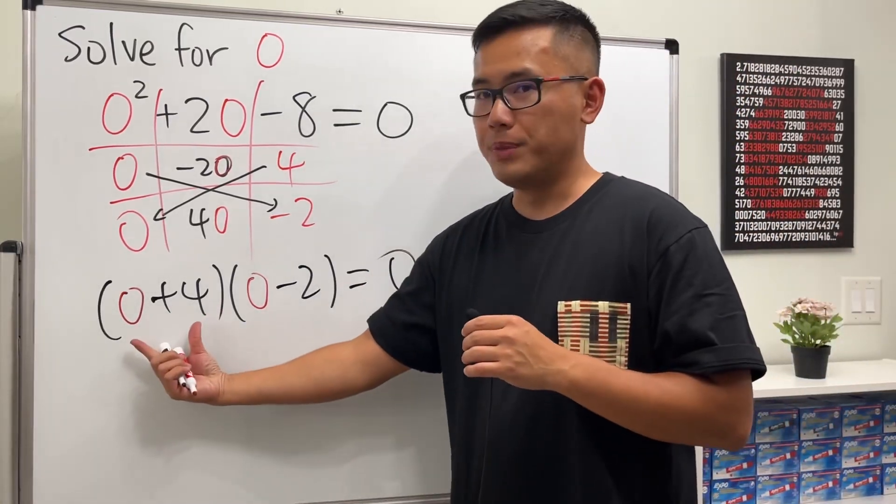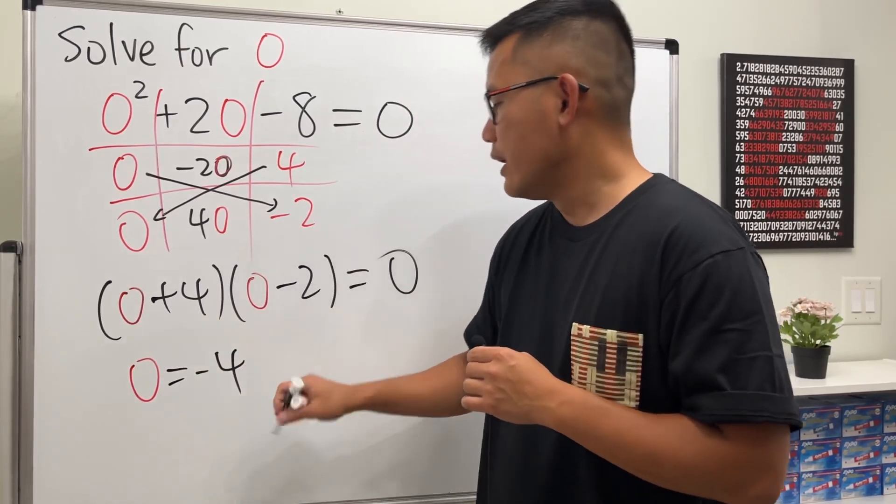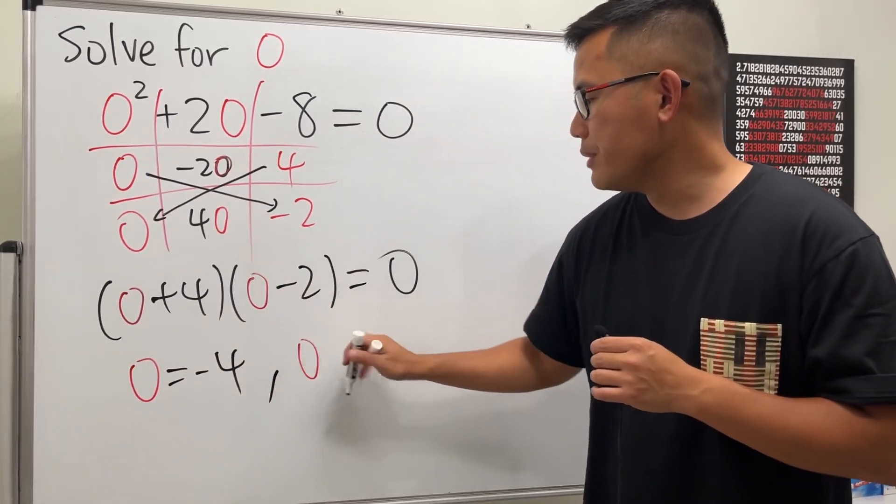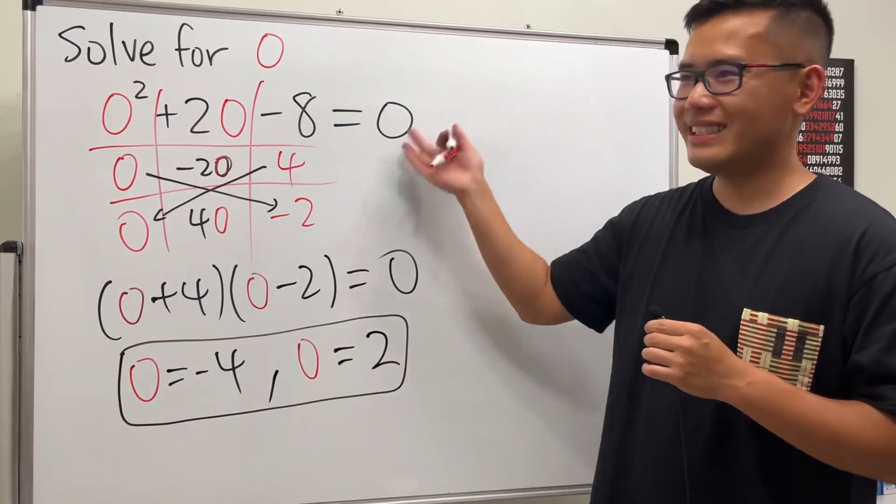Put this to be 0 and then minus 4 on both sides. O will be equal to negative 4. And then for this right here, O will be equal to positive 2. And there you have it. These are the solutions to that equation.